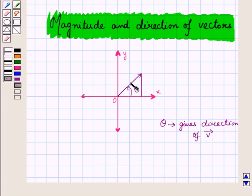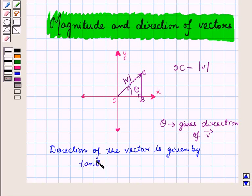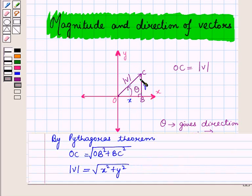This is a right angle triangle with hypotenuse equal to the magnitude of vector v. Let this triangle be triangle OBC, so OC is equal to the magnitude of vector v. The direction of vector v is given by tan theta equals perpendicular over base, where perpendicular is y and base is x, so tan theta equals y over x, where x is not equal to 0. Applying Pythagoras theorem, we have the magnitude of vector v equal to the square root of x squared plus y squared.